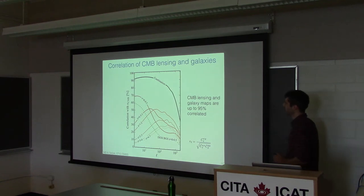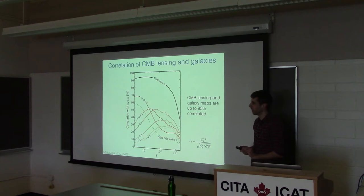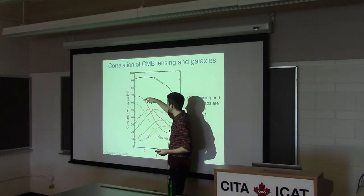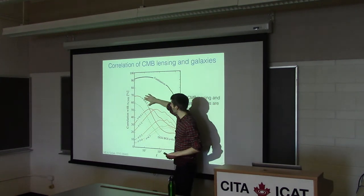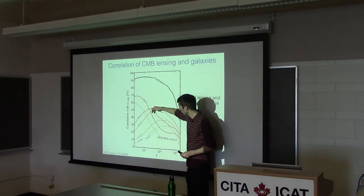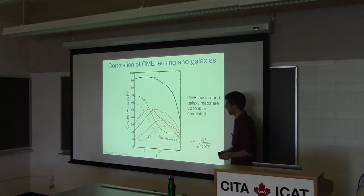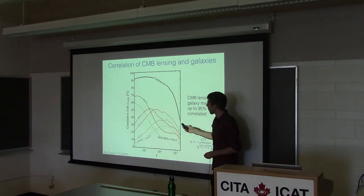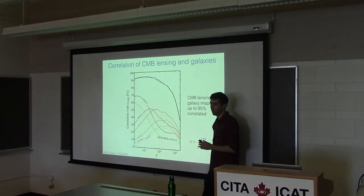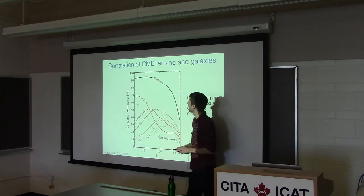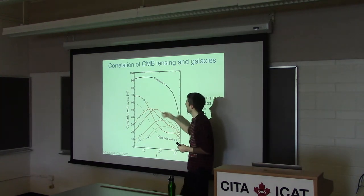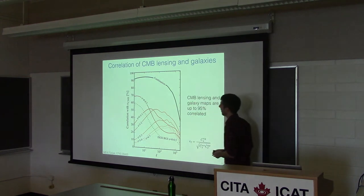With these LSST number density assumptions, the cross-correlation coefficient between galaxy clustering and CMB-S4 lensing maps shows different redshift bins of LSST peaking at around 70% correlation with CMB lensing on large scales for the lowest redshift bin. Combining all galaxies weighted to trace the CMB lensing kernel gives a combined cross-correlation coefficient of about 95% at L around 10.